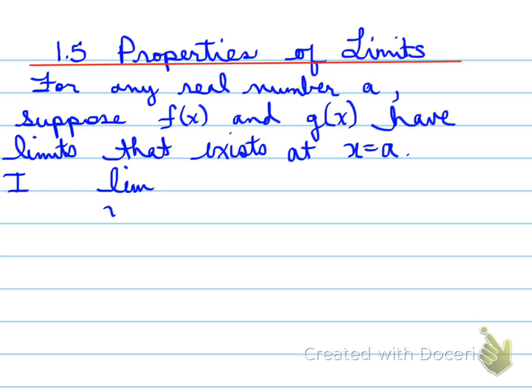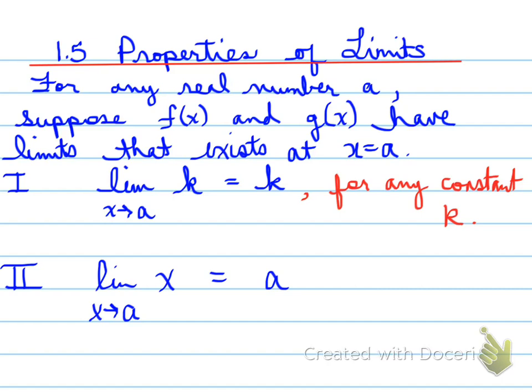The different properties include the first one, which is the limit as x approaches a of some constant k. The limit as x approaches a of some constant k is equal to just k, because if you're taking as a number approaches a constant, the answer will always be a constant. This is for any constant k. Now, the limit as x approaches a of x is actually just equal to a, and that makes sense. As x approaches a of the function, and the function is just a line y equals x, then that number will approach the same number. So therefore, it must equal a.